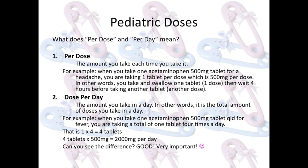Dose per day is the total amount of doses you take in a day. For example, when you take one acetaminophen 500 milligram tablet QID for fever, you are taking a total of one tablet four times a day. That is one times four equals four tablets. Four tablets times 500 milligrams equals 2,000 milligrams per day.